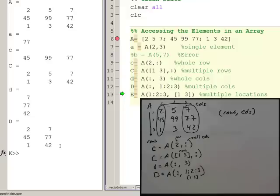Now, the thing that you can also do, which really, this gets really sort of cool, is you can do multiple locations. So if we break this down, this is A, at rows 1, colon, 2, colon, 3, comma, columns 1 and 3.